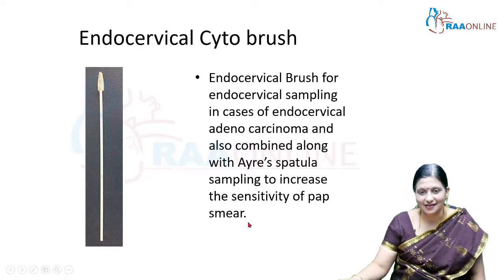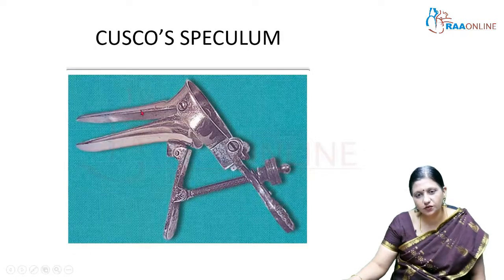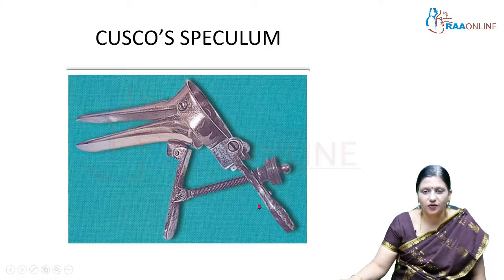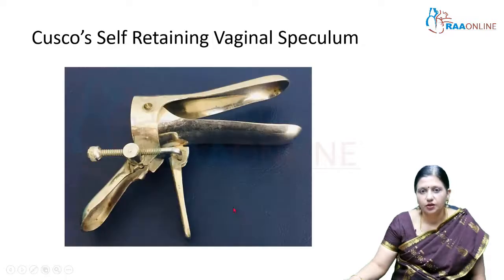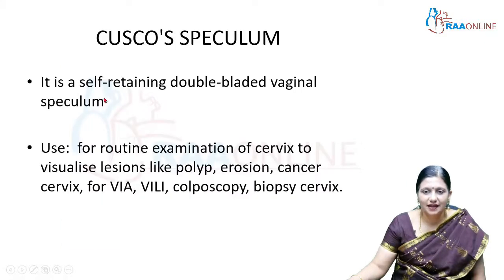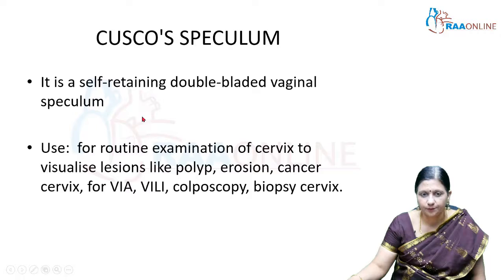The Cusco's speculum is a double-bladed, self-retaining vaginal speculum. It is inserted into the vagina, the jaws are thrust open, and held in place with a screw — so no assistant is required. It is also called the duckbill speculum. Its advantage over the Sims' speculum is that Sims' requires an assistant for holding.